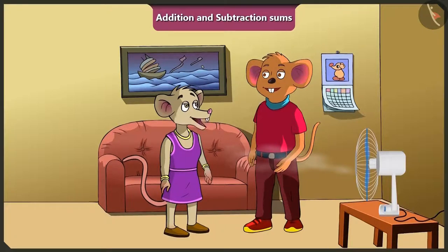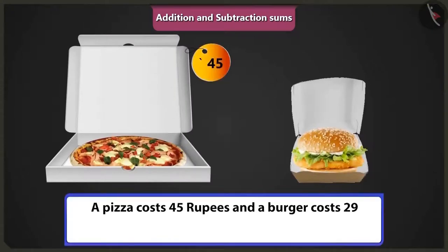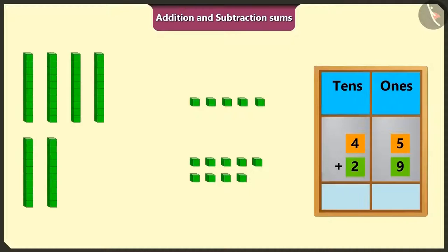Now give a party from the remaining 12 rupees after buying this new fan. Chichi, what could we buy from 12 rupees? Look, I have 80 rupees with me now. Chichi, tell me whatever you want to eat. I will call uncle at the hotel and order a pizza for you and a burger for me. Choo Choo, pizza costs 45 rupees and burger costs 29 rupees. So what will be the total cost of both? Come on, let's put 45 and 29 in the box of ones and tens and do their addition.